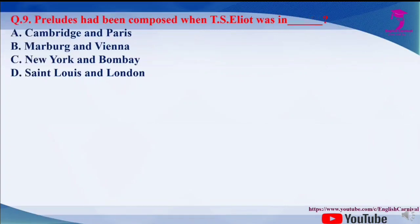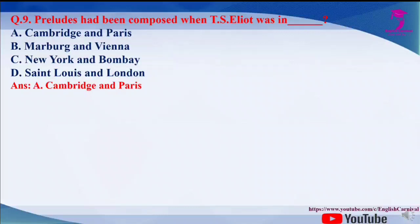Question number nine: Preludes had been composed when T.S. Eliot was in dash. The options are A. Cambridge and Paris, B. Marburg and Vienna, C. New York and Bombay, and D. St. Louis and London. The correct answer of this question is A, that is Cambridge and Paris.